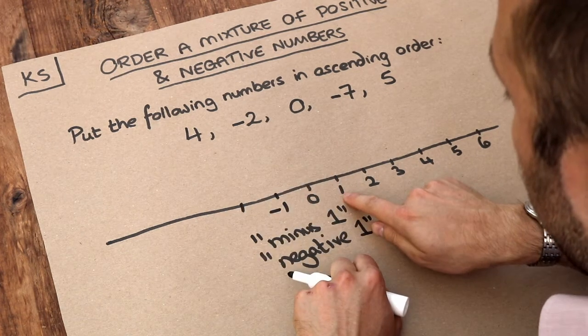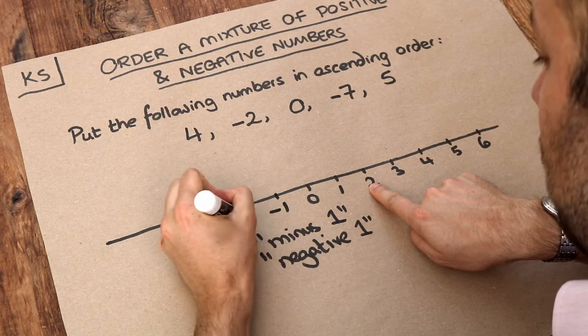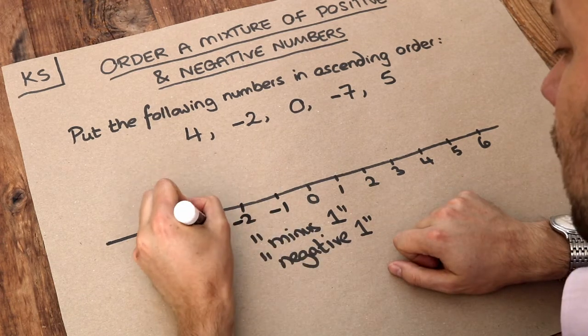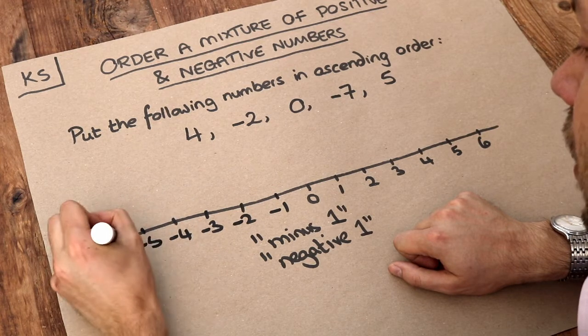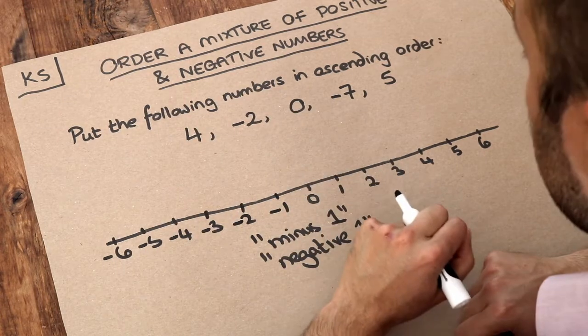And similarly, if going up from one gets you to two, then going down from minus one gets you to minus two. Again, we've got this symmetry here. And then we can go down further. It then goes to minus three, minus four, minus five, etc. And we can go on forever in this direction. We can get to minus a billion if we wanted to.